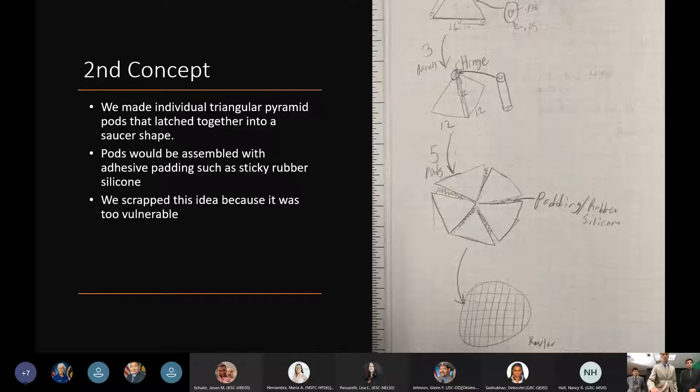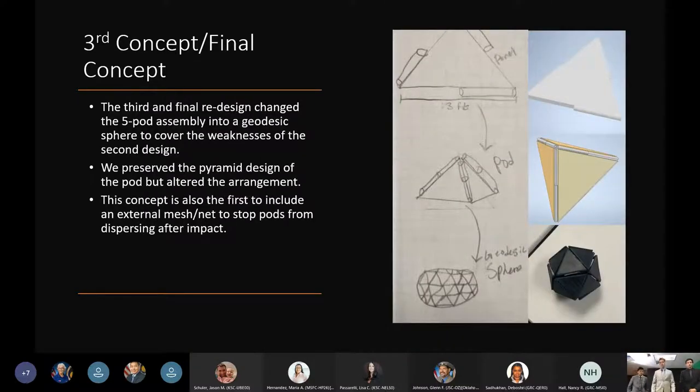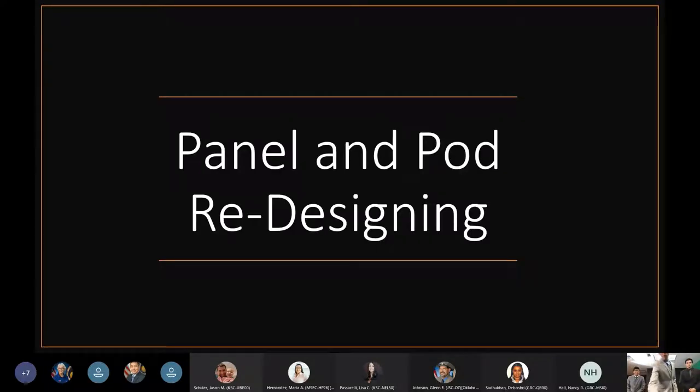This led us to our third and final design. We stuck with the pyramid pods because if one breaks off it won't roll anywhere, and it's a very strong shape geometrically. We assembled these pyramid pods into a geodesic sphere, which preserved the strengths of our original spherical design without many weaknesses. It also preserved the strength of the second design with multiple pods, so if one pod breaks, not everything is lost. We assembled all these pods inside of a net so when it hits the ground and the pods disperse, they stay inside the net and help absorb the impact.